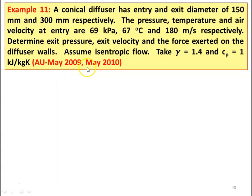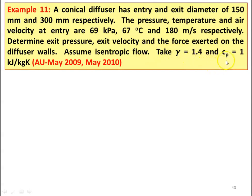Example number 11 from May 2009 and May 2010 question paper. A conical diffuser has entry and exit diameters of 150 millimeter and 300 millimeter respectively. The pressure, temperature, and air velocity at the entry are 69 kilo Pascal, 67 degree Celsius, and 180 meters per second respectively. Determine exit pressure, exit velocity, and the force exerted on the diffuser wall assuming isentropic flow. Take gamma equal to 1.4 and Cp equal to 1 kilo Joules per kilogram Kelvin.